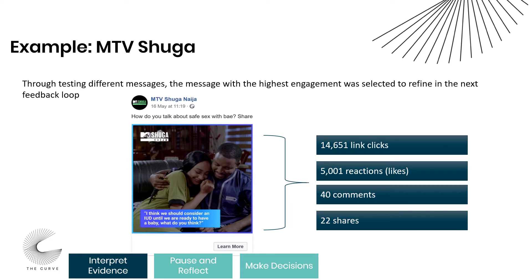Here within our MTV Sugar case study, we can clearly see how the data gathered by Facebook can help to clearly point out the message with the highest engagement. We see here the message that was the best-performing within our tests, which got the highest number of link clicks, reactions, and comments. This was a clear, easy way to look at the level of engagement across different messages and see which had the highest engagement — leveraging data already gathered by Facebook to make quick comparisons based on engagement metrics.